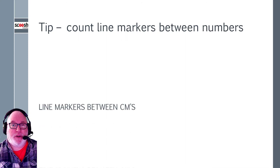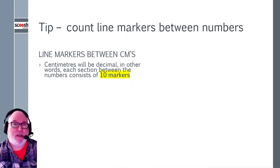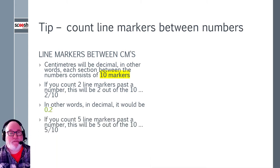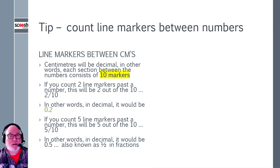So here's a tip for you. So the line mark is between centimeters, as we said, 10 markings, decimal. So if you count two line markings past a whole number, then it'd be 2 out of 10. In other words, 0.2 in decimal. If you count 5 line markings past the number, then it's 5 out of the 10. 5 over 10. Write it in decimal, 0.5. It's 5 tenths.